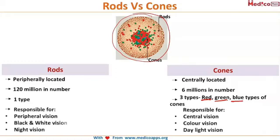Now coming to the function: the rods are responsible for peripheral vision, black and white vision, and night vision. The cones are exactly opposite to this — peripheral becomes central in cones, black and white becomes color, and night becomes daylight vision. So that is about the differences between rods and cones.